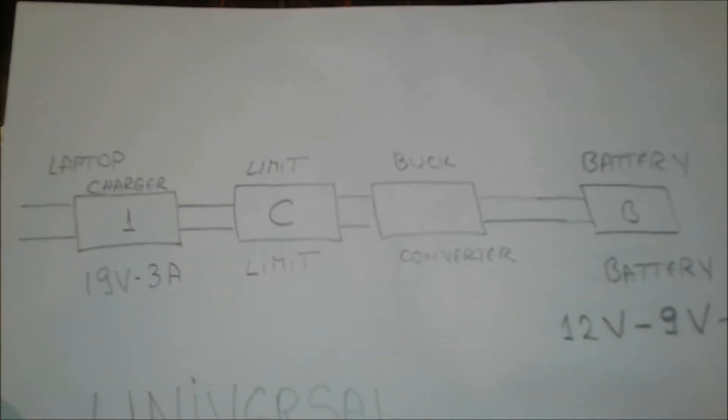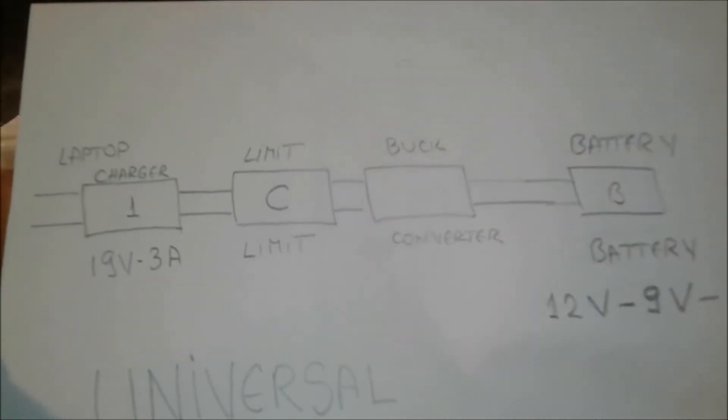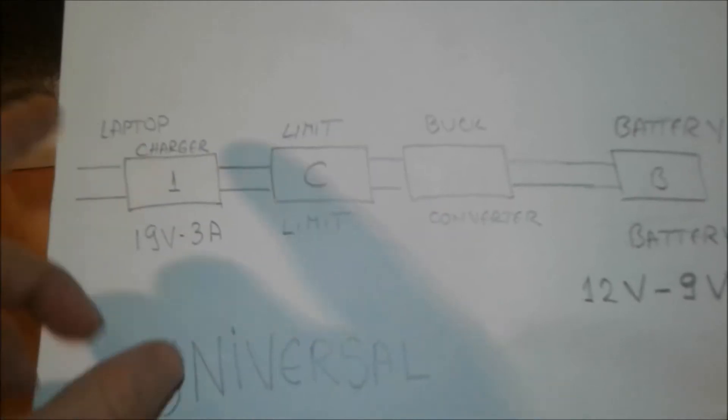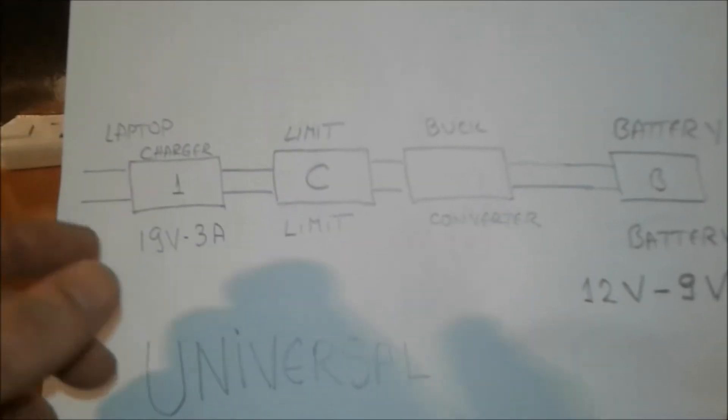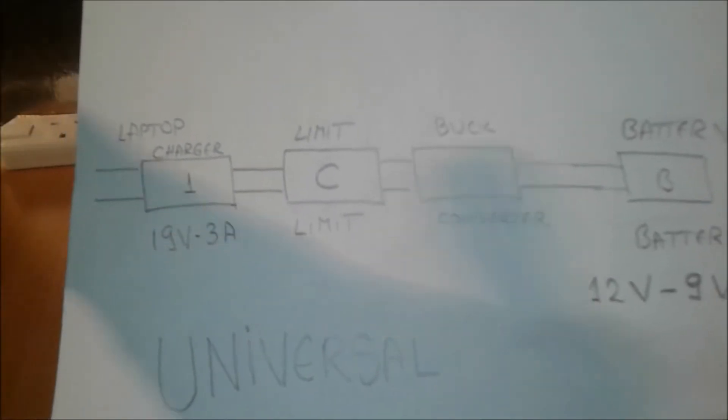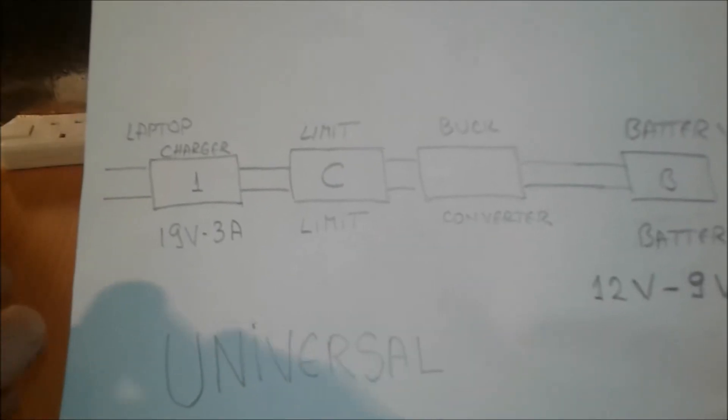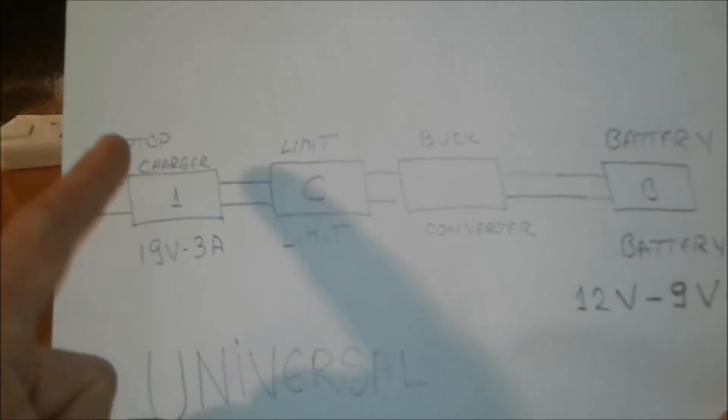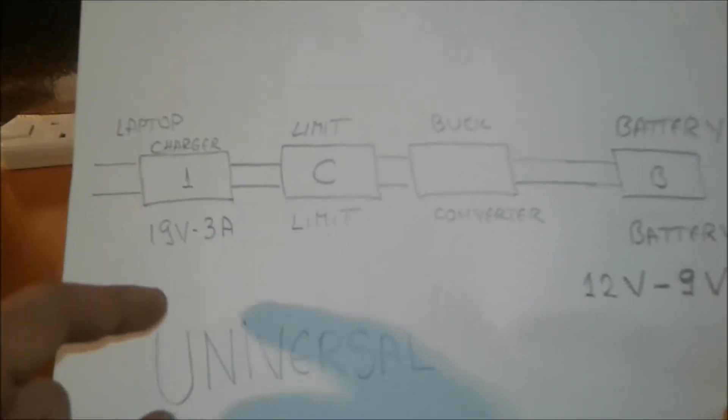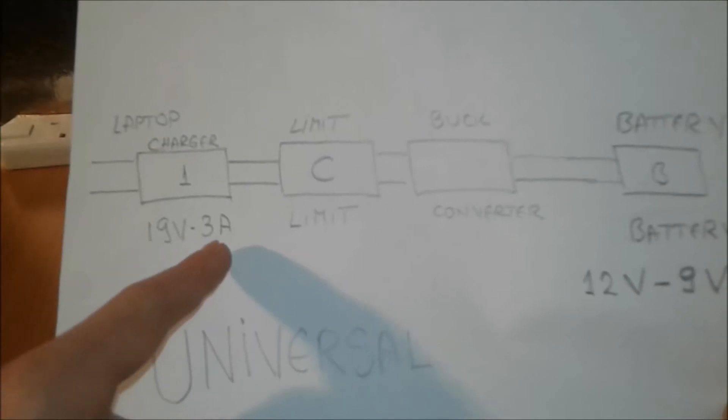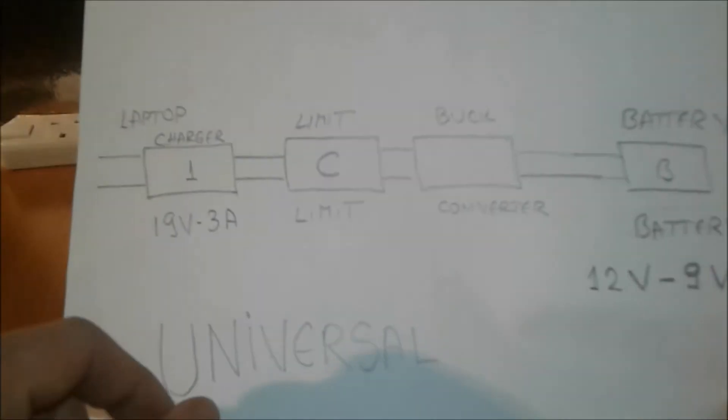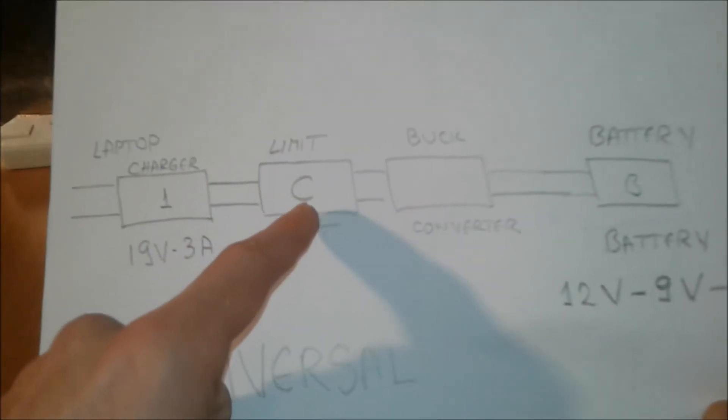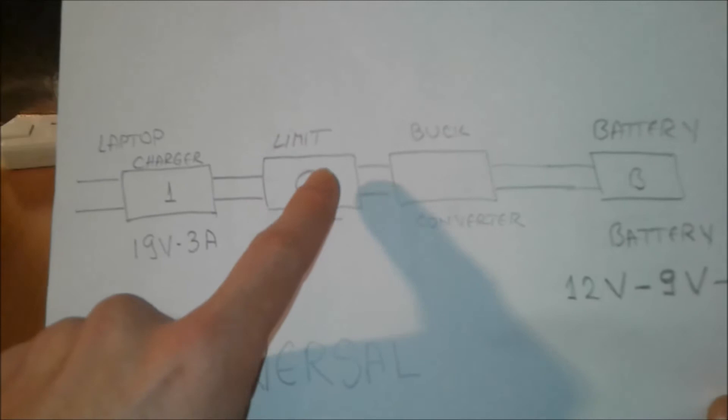This is the diagram, folks. We have the input here, which is a laptop charger that you can buy or borrow - everybody has a laptop or can find an adapter these days. This is the main input power which normally lies between 19 volts and 3 to 5 amps. After that, we're gonna make a current limiter unit.